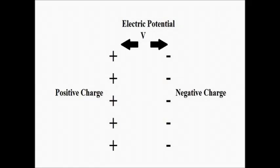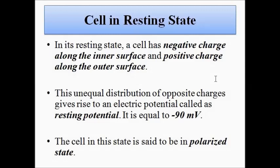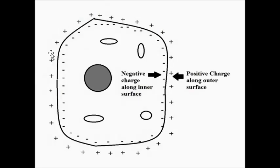There are two conditions in which the behavior of a human cell is analyzed: the resting state (unexcited state) and the excited state. In the resting state, the cell has a negative charge along the inner surface of the cell membrane and a positive charge along the outer surface. As you can see, there is negative charge on the inside and positive charge on the outside of the cell membrane.